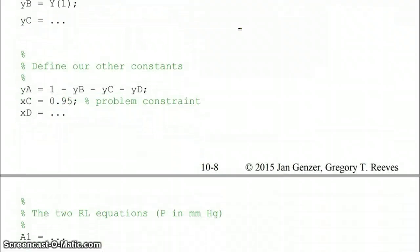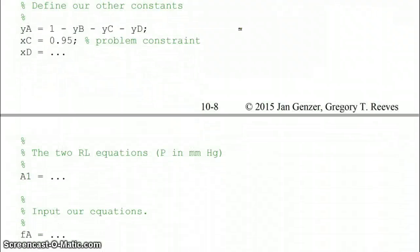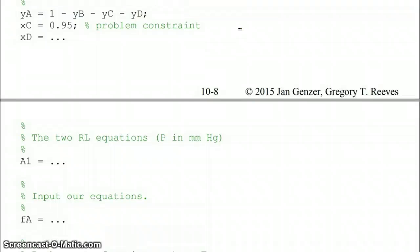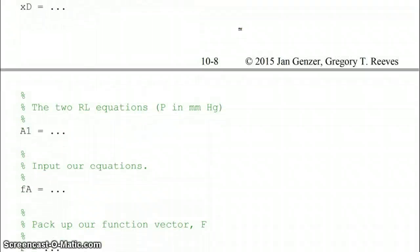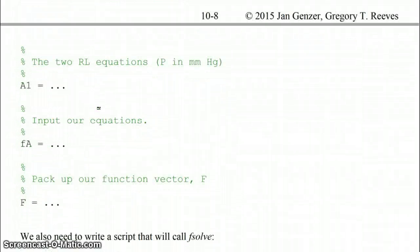We're going to write our two Antoine equations, and then input our actual six equations that we're going to solve for. This should be labeled as Antoine equations. And then finally, we're going to pack back up our function vector f. To show you what that looks like, we're going to go over to the MATLAB function.